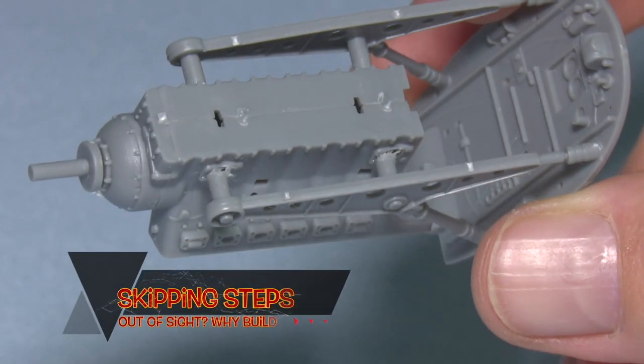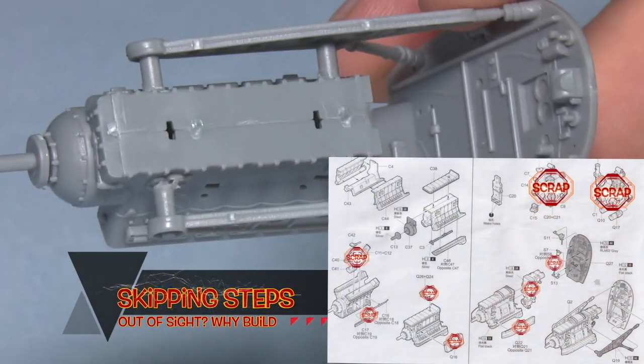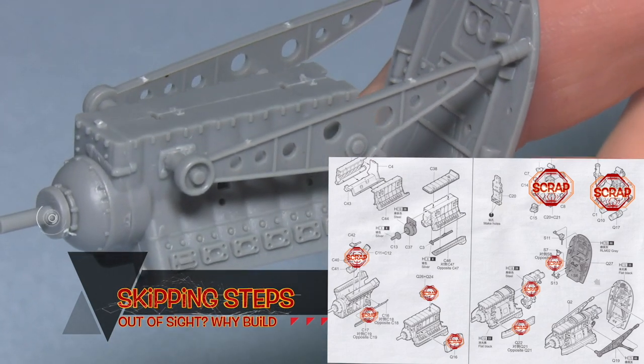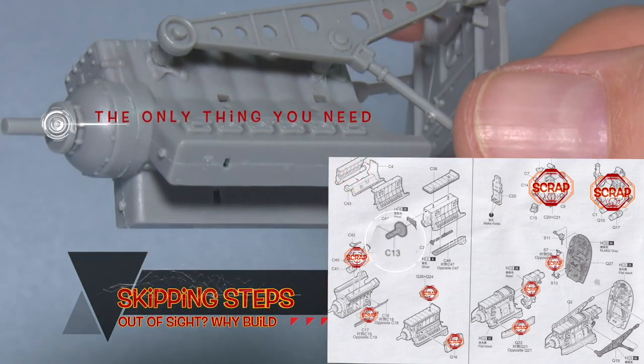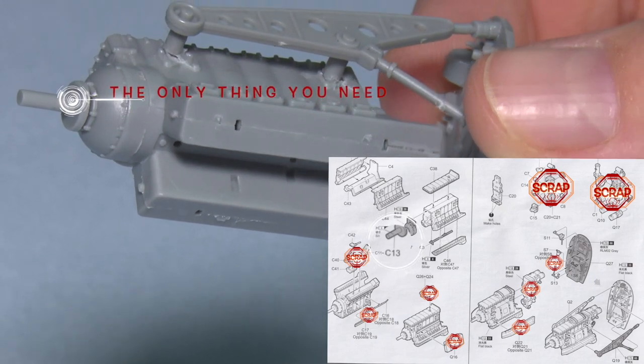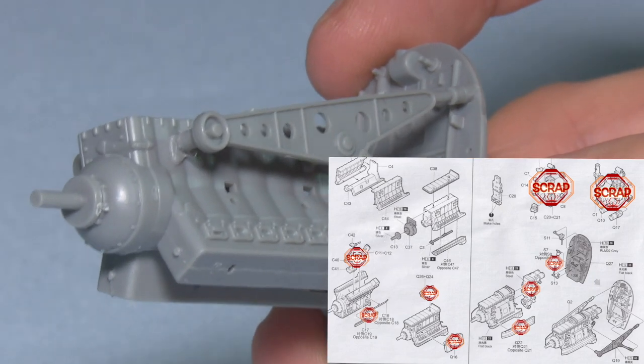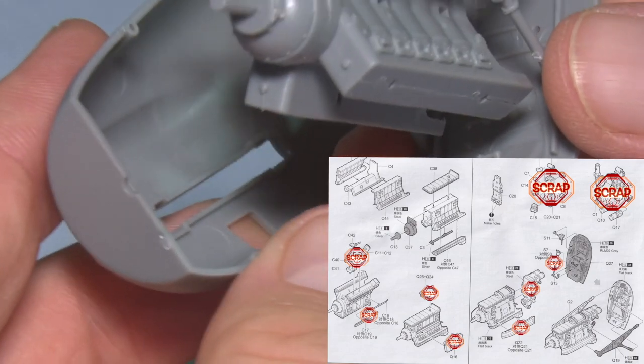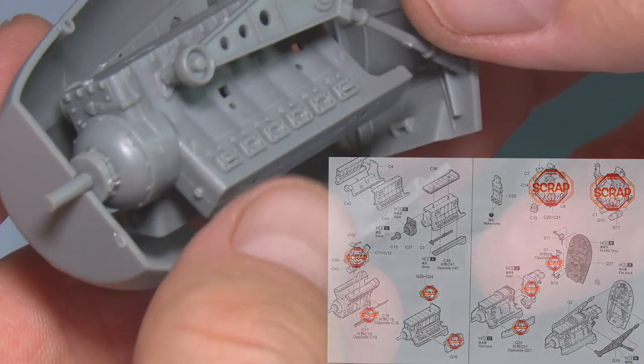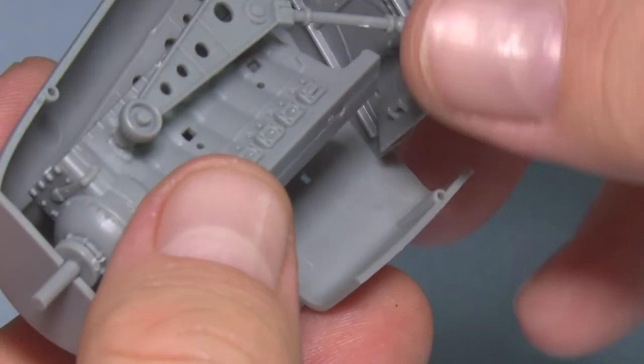Often there are items in the instructions that don't actually need to be built. Sometimes this can be an engine, sometimes it's a gun bay with ammunition, things like that, that unless you're actually opening it up, you can just skip them all together. You still need to build some of the components just for structural strength, but not everything.